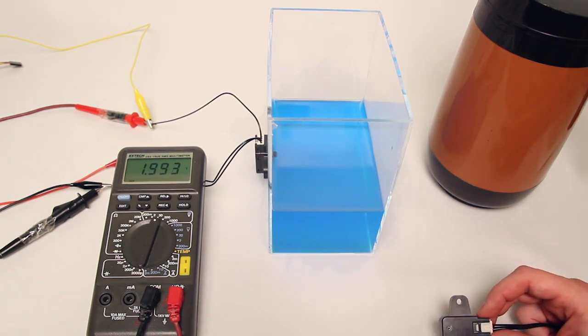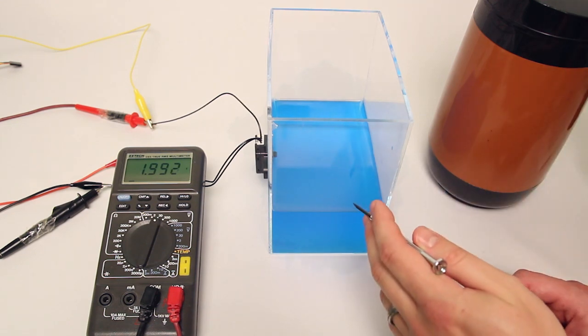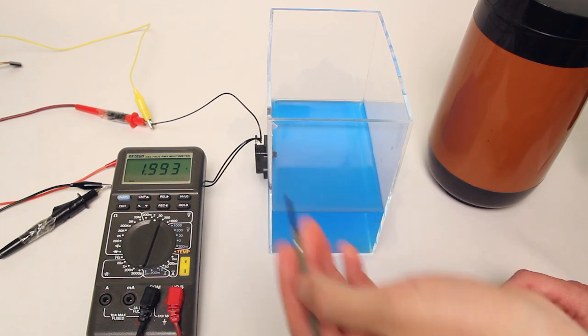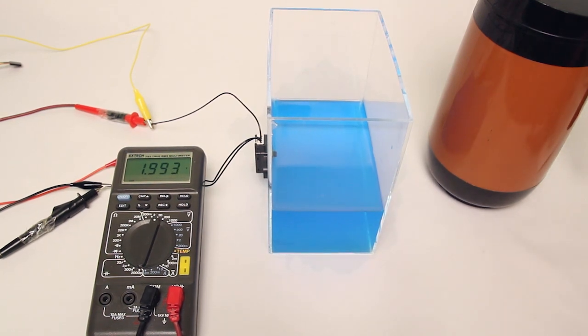Now what I'm going to do here is add water to this container, and as it increases the pressure, you're going to see the voltage creep up. This will give you a very good idea of the precision of this unit.